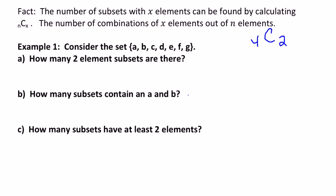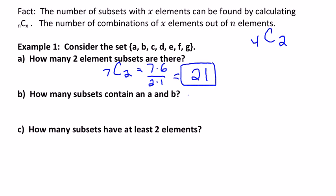Looking at our example: we have a set with the first seven letters, and it asks how many two-element subsets are there. Applying that last fact, it's just going to be seven choose two, which is (7 × 6) / (2 × 1), which is simply 21. So there are 21 two-element subsets.